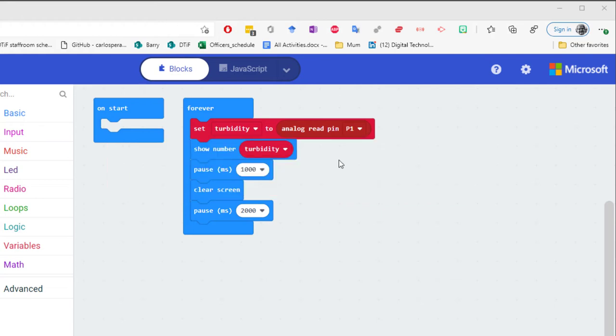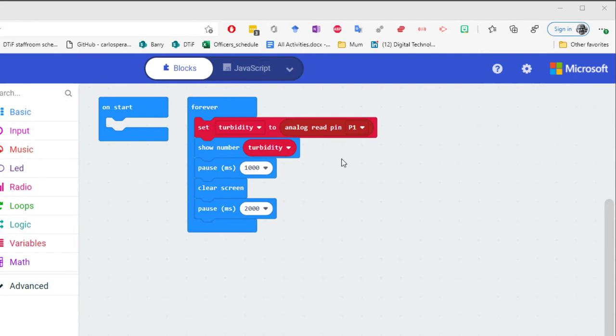Here's my initial code that we're going to use to get the raw data values from the meter. Note that it's inside a forever loop and I've created a variable which I call turbidity and it's going to read the data that comes through on analog pin P1 on the microbit and it's going to show the turbidity value.